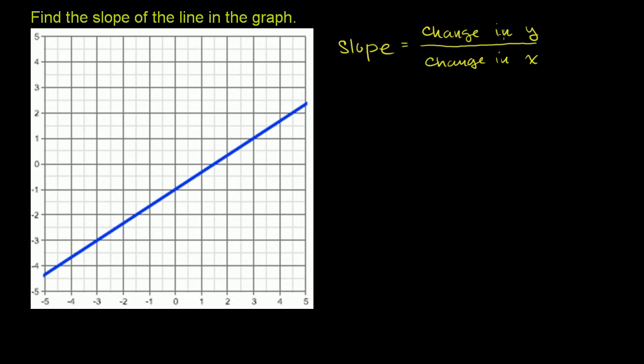And for a line, this will always be constant. And sometimes you might see it written like this. You might see this triangle. That's a capital delta. That means change in y over change in x. That's just a fancy way of saying change in y over change in x. So let's see what this change in y is for any change in x.